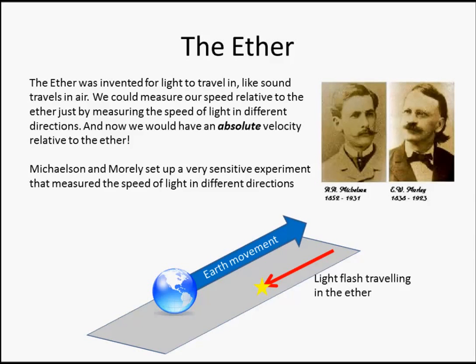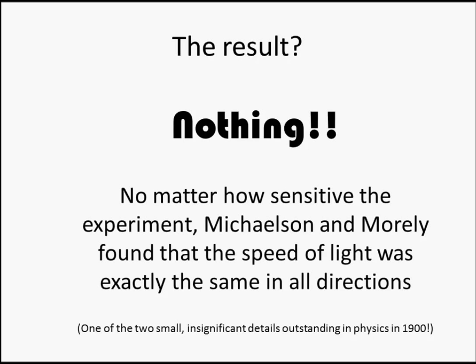In 1887, two gentlemen called Michelson and Morley conducted a very careful and very sensitive experiment to measure the speed of the earth relative to the ether. And what was the result? It has been called the most famous failed experiment ever because they found absolutely nothing. No matter what direction they tried, no matter how carefully they made their measurements, the speed of light never changed by even the teeniest little bit. This was one of the two small, almost insignificant details that were still outstanding in physics at the end of the 1800s, the constancy of the speed of light.